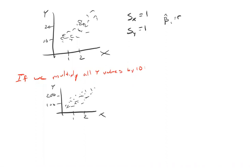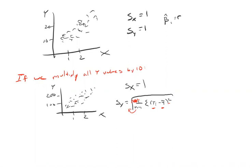If you multiply all the y values by 10, you haven't changed the standard deviation of x. But what have you done to the standard deviation of y? A standard deviation is the square root of the sample variance — the square root of one over n minus one times the sum of (y minus mean of y) squared. If you multiply all values by 10, each y value and the sample mean both get bigger by 10, so you get a factor of 10 squared inside, and taking it out of the square root gives you a factor of 10. The point is: if you multiply all y values by a constant like 10, the new standard deviation is 10 times as big. When you multiply a variable by a constant, the standard deviation is multiplied by that same constant.